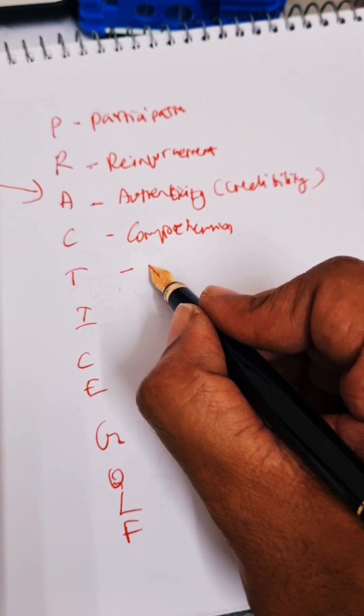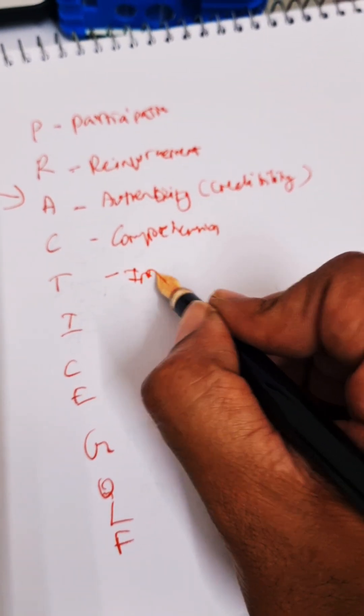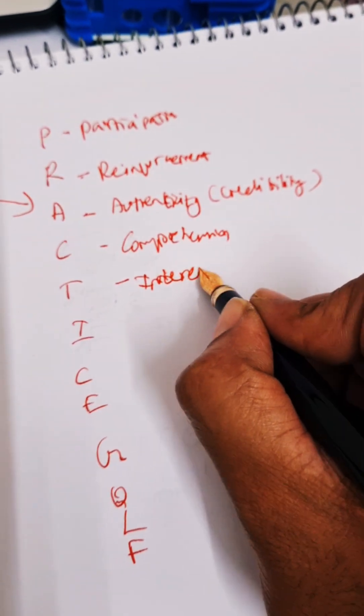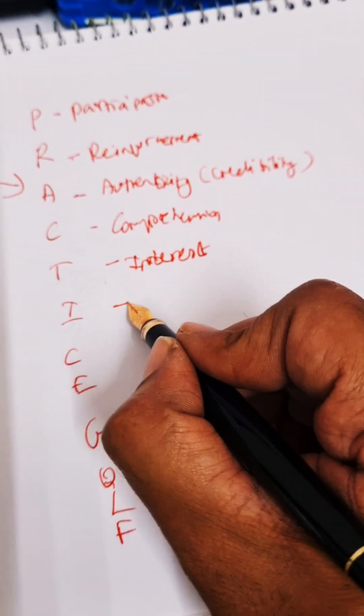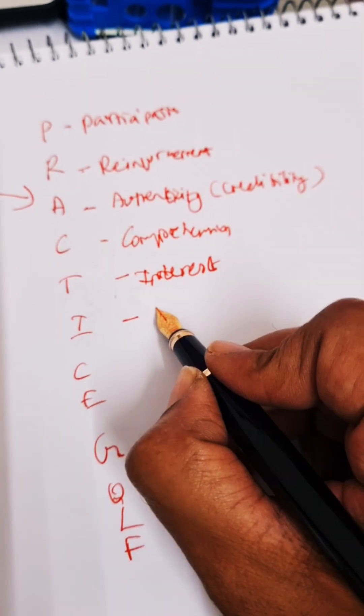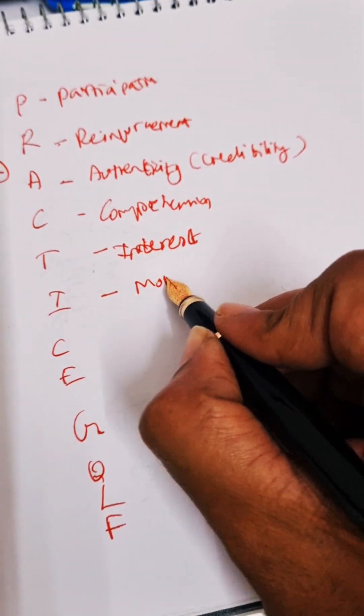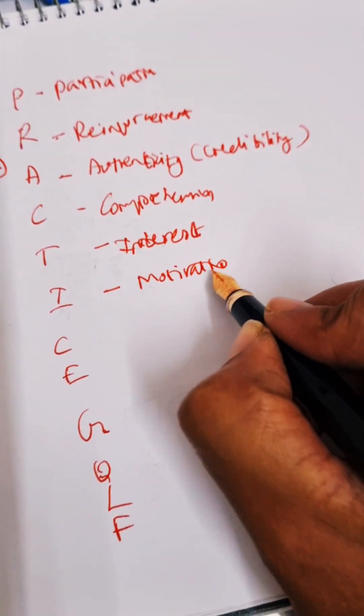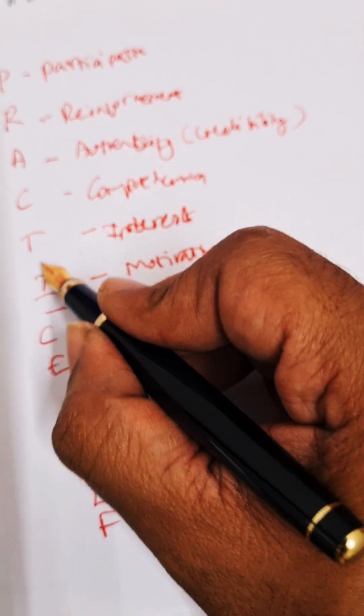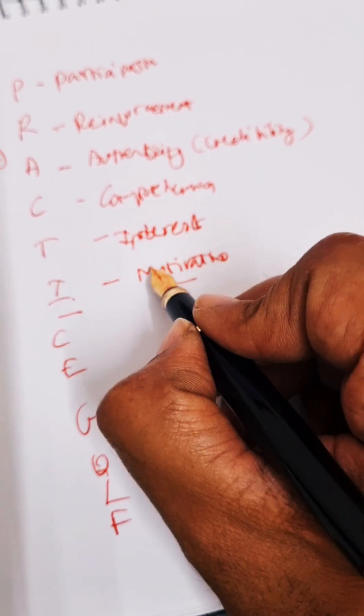T is interest. The topic should arouse interest. It should be based on felt needs. I for motivation. You can put anyway motivation I or you can put interest here, motivation here. Anyway, you can interchange.